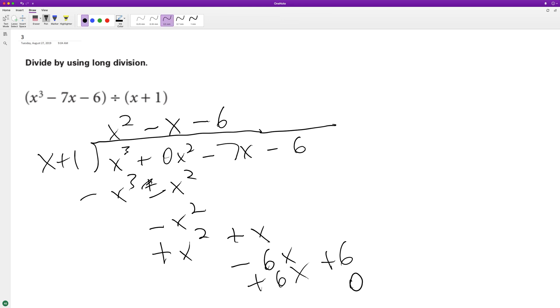And we get a remainder of 0, so if we take x cubed minus 7x minus 6 divided by x plus 1, we end up with x squared minus x minus 6, and that's it.